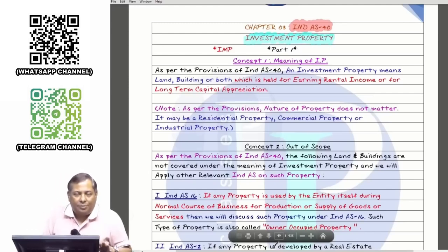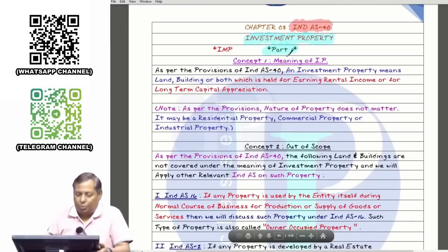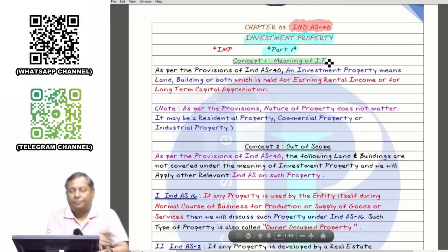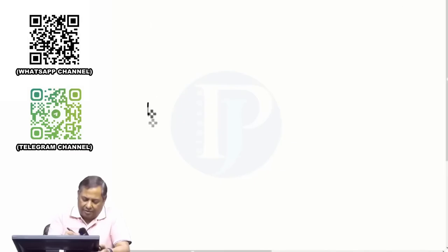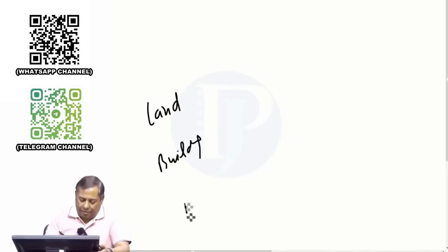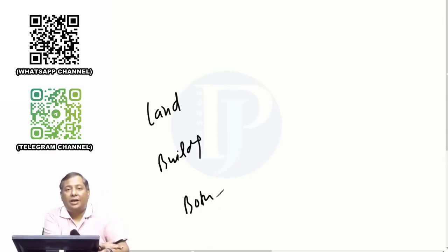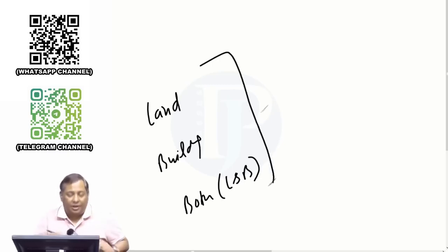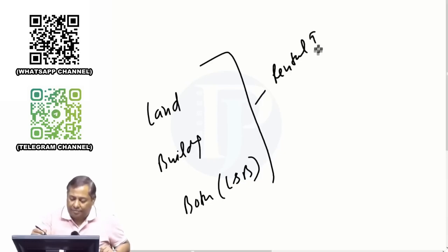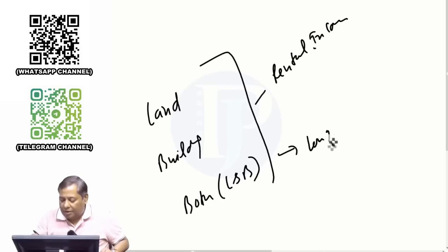I am going to explain IND AS 40 Investment Property. This is part number 1, lecture number 1. The first concept I taught was the meaning of IP - what is an investment property? Investment property can be land, a building, or both. There should be an objective of rental income or long-term capital appreciation.